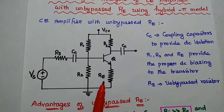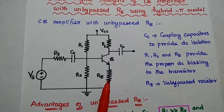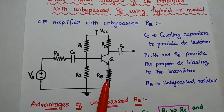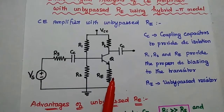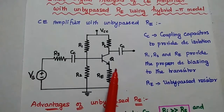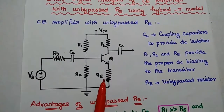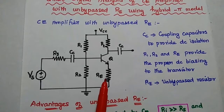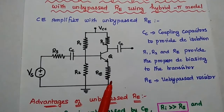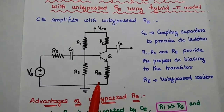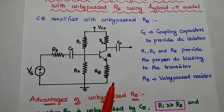RE is the emitter resistor. It is also known as the unbypassed resistor because the bypass capacitor is not connected in parallel with this emitter resistor to bypass the current signal. Hence it is called the unbypassed resistor.